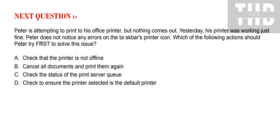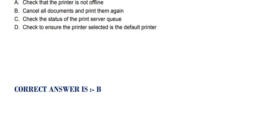Next question: Peter is attempting to print to his office printer but nothing comes out. Yesterday his printer was working just fine. Peter does not notice any errors on the taskbar printer icon. Which of the following actions should Peter try first to solve this issue? Option A: Check that the printer is not offline. Option B: Cancel all documents and print them again. Option C: Check the status of the print server queue. Option D: Check to ensure the printer selected is the default printer. The correct option is Option B.